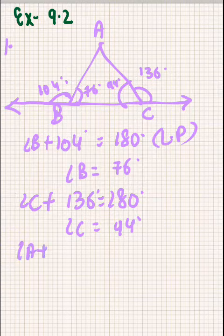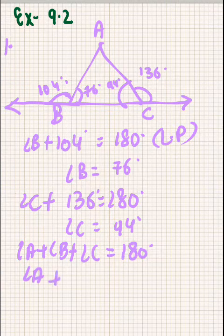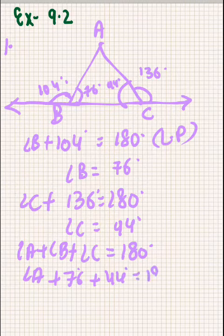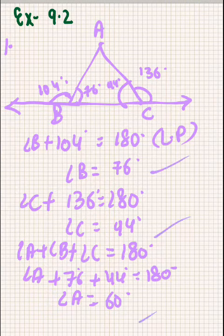Then angle A plus angle B plus angle C in triangle ABC will be equal to 180 degrees by the angle sum property. We have to find angle A. Angle B is 76 and angle C is 44, so angle A after all the calculations will be equal to 60 degrees. So this is the solution for question number 1.